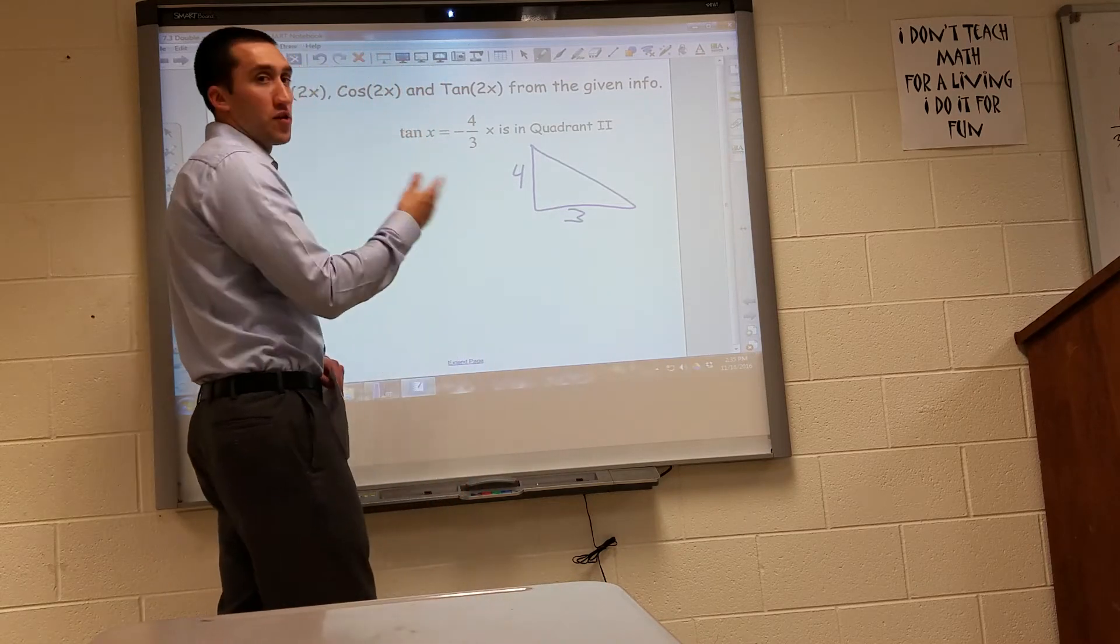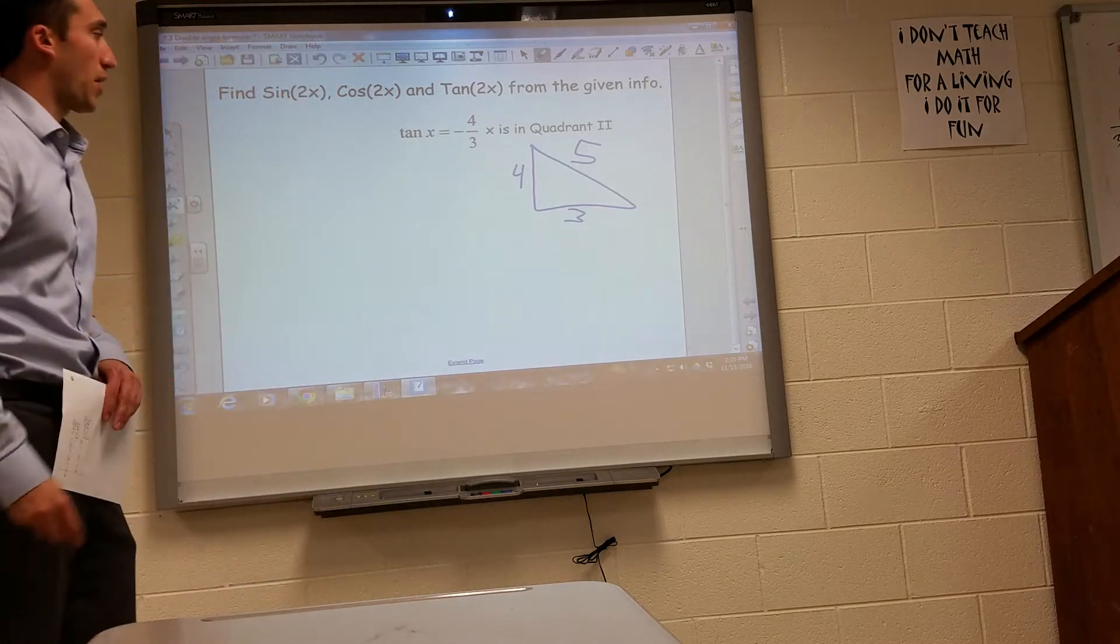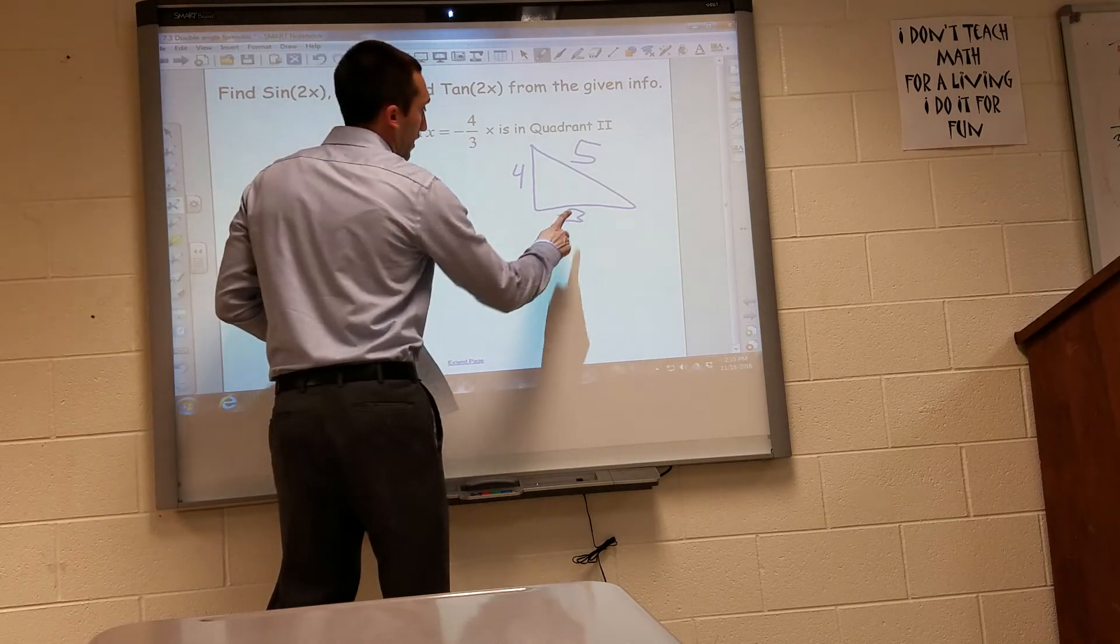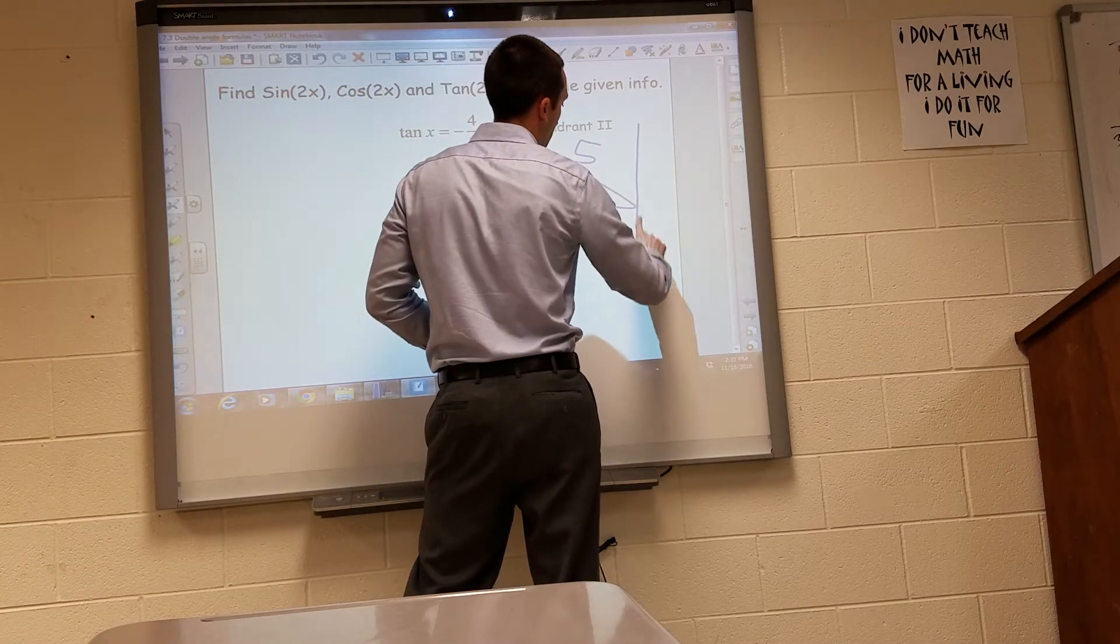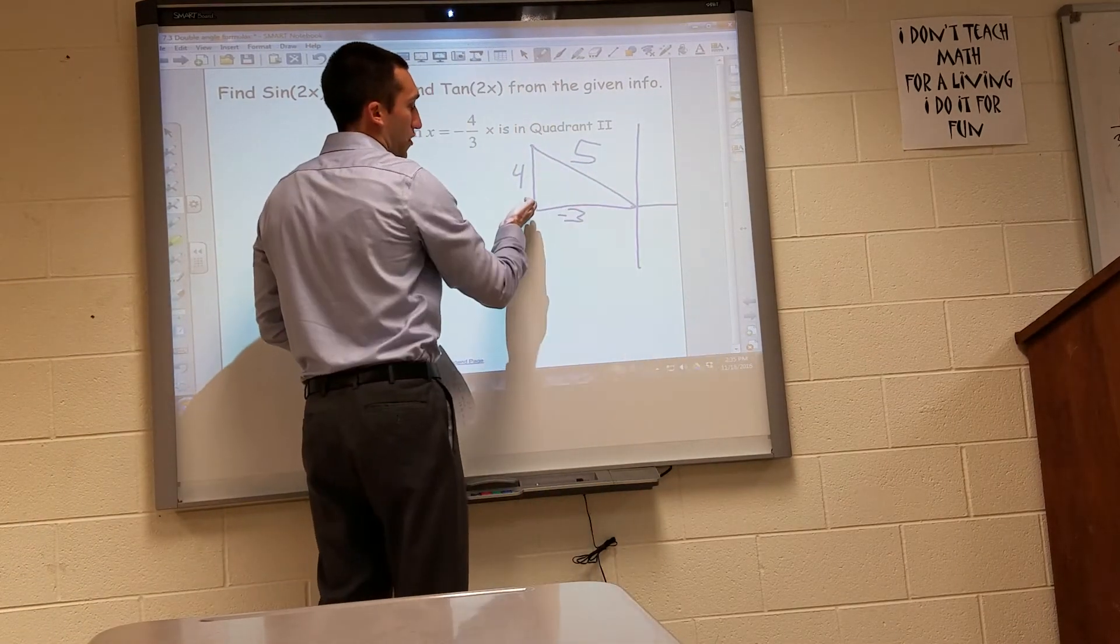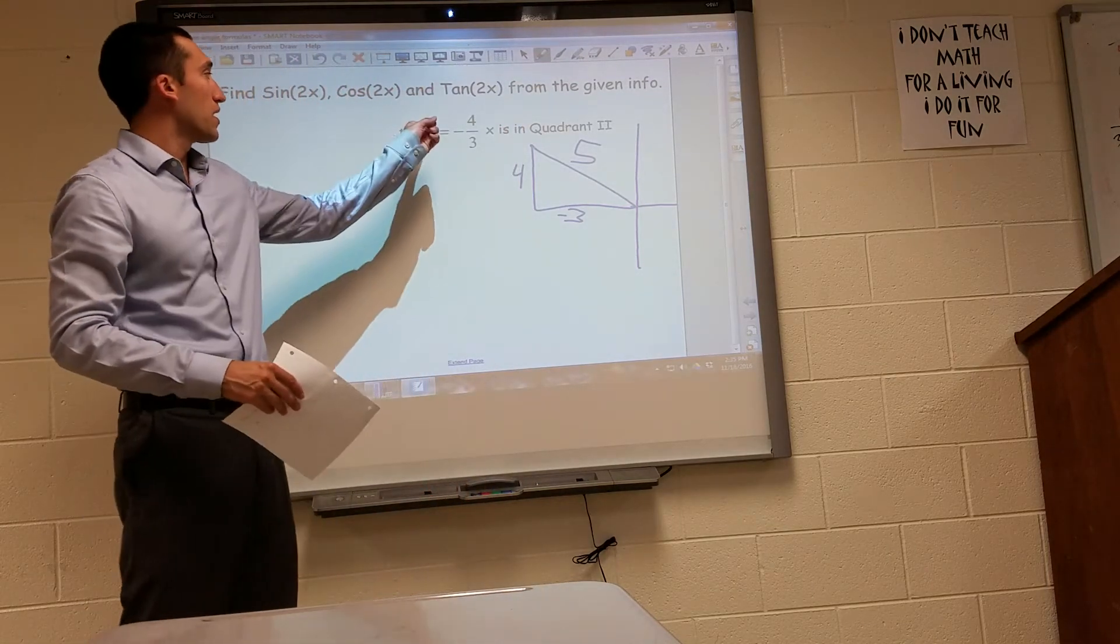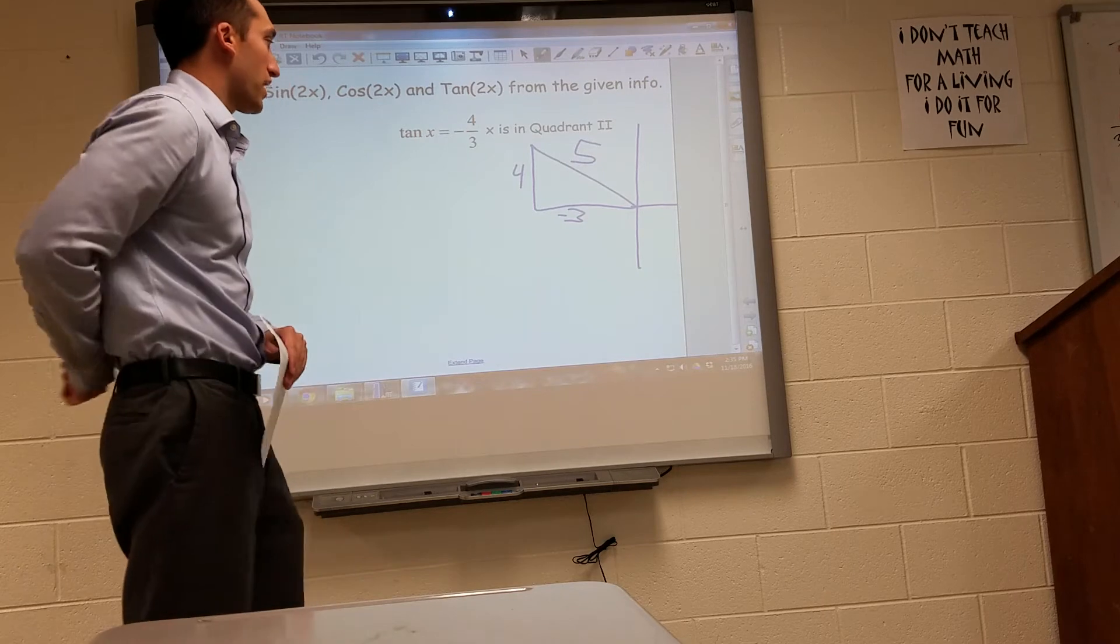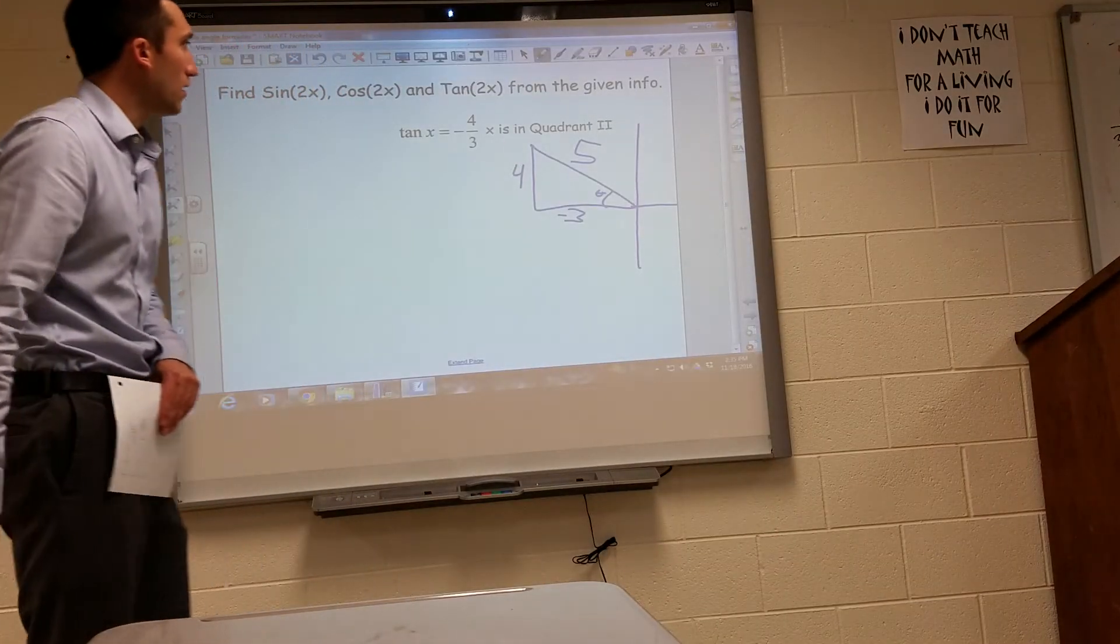And if you go ahead and do Pythagorean theorem, you'll determine that the hypotenuse is 5. Right, and this is technically our negative 3, because we're in the second quadrant. If you want to think of your axes like this. So my 3 is the negative value, my 4 is the positive value, giving me negative 4 thirds for my tangent with my angle right here.